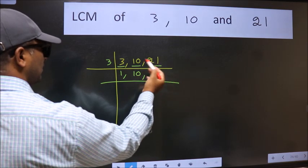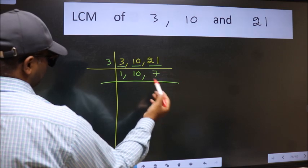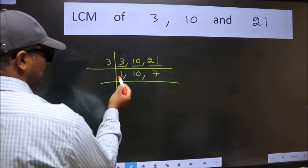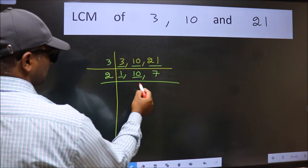The other number 21: when do we get 21 in the 3 table? 3 times 7 is 21. Now we got 1 here, so focus on the next number 10. 10 is 2 times 5.